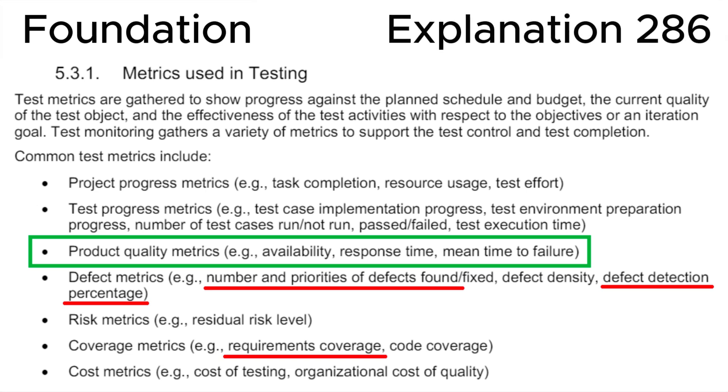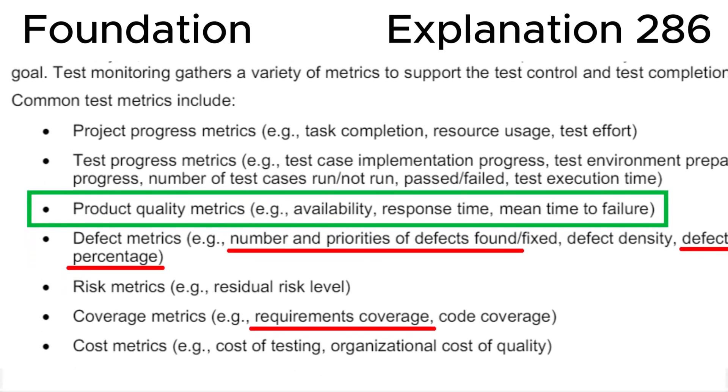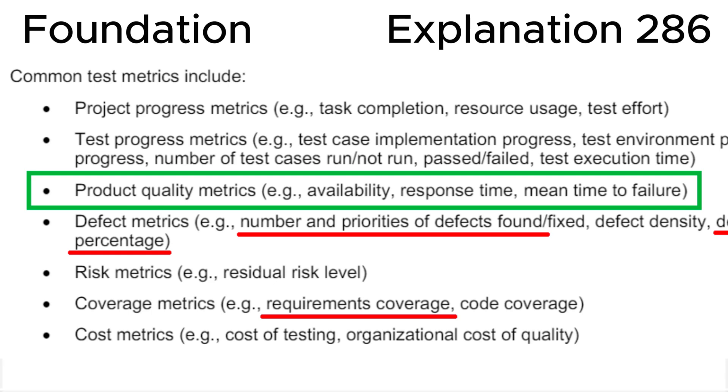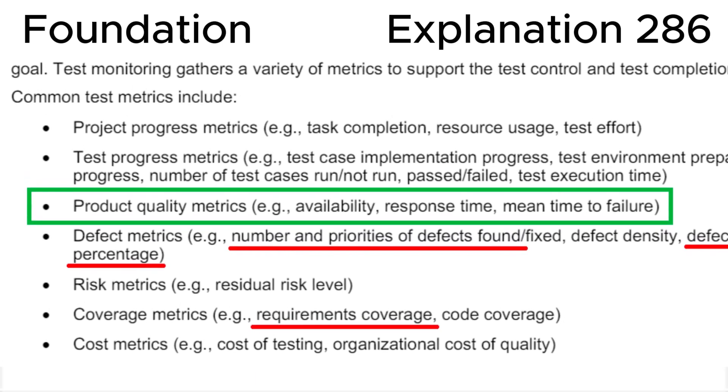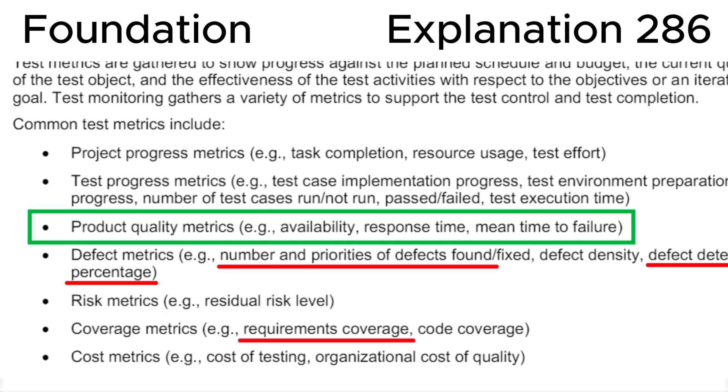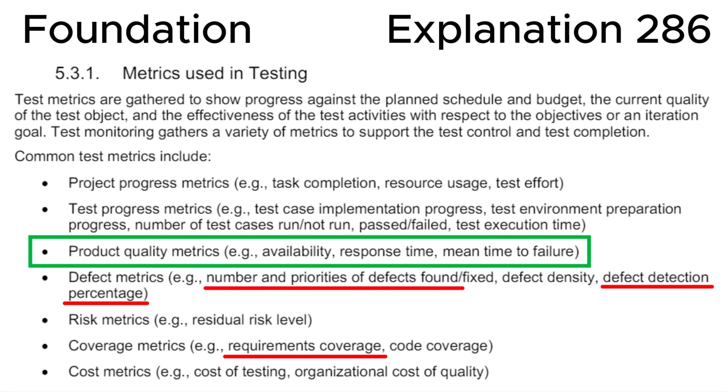Finally, let's look at section 5.3.1, Metrics Used in Testing, in the ISTQB syllabus, where we can see that product quality metrics are availability, response time, and mean time to failure. This is fully consistent with the correct answer A. Please don't mix up product and project metrics and you will definitely pass the ISTQB Certified Tester Foundation Level exam.